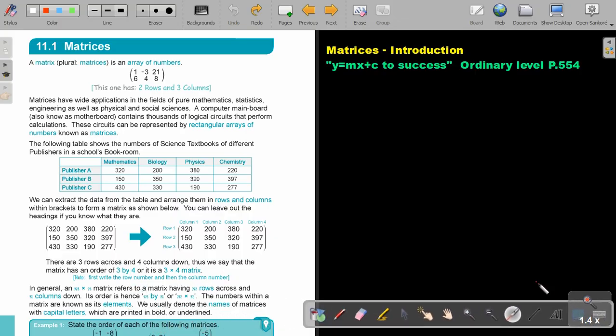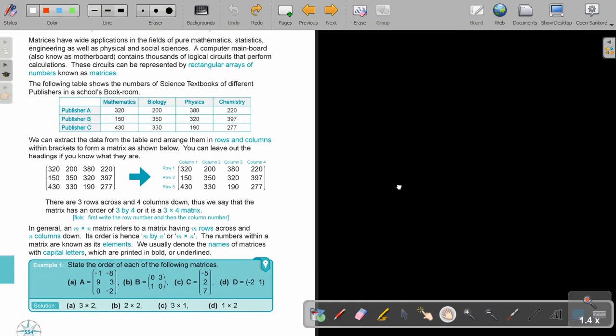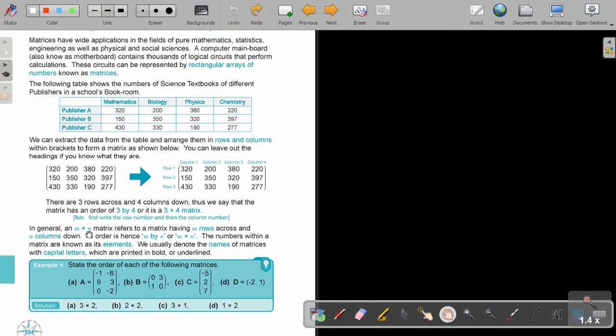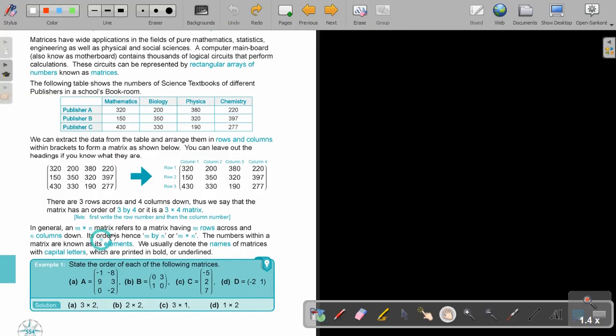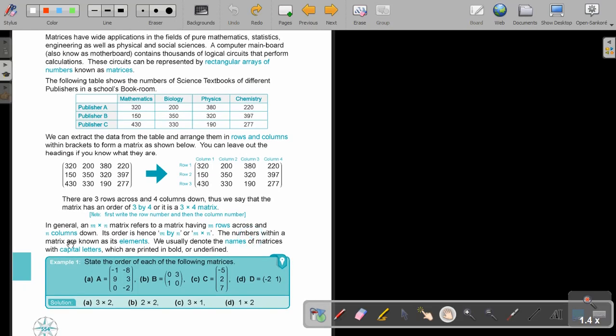There are three rows across and four columns down. Thus, we say that the matrix has an order of three by four or it's a three multiply four matrix. In the place of the by, you can also put a multiplication sign. First write the row number and then the column number. In general, an M multiply N matrix refers to a matrix having M rows across and N columns. Its order is M by N or M multiply N. The numbers within a matrix are known as its elements. We usually denote the names of matrices with capital letters, which are printed in bold or underlined. Don't make it bold if you rewrite it. Just underline it.